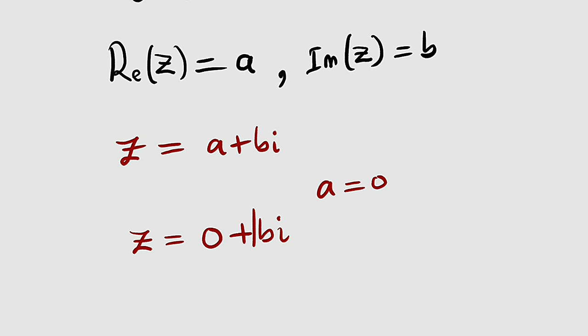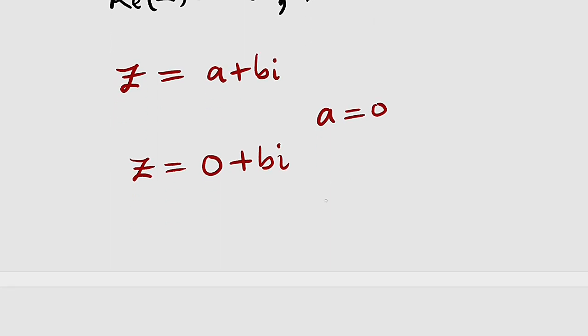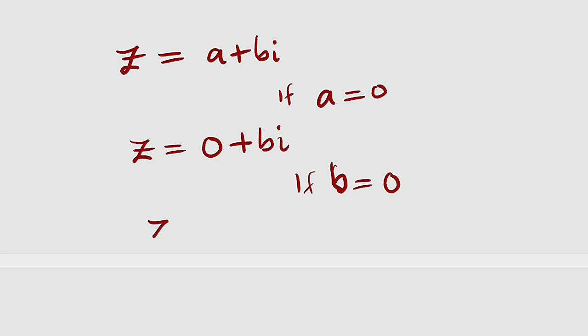If b is equal to zero, we have z to be equal to a + 0i, and 0i is just zero. This implies that z is only equal to a, a real number, but this is also a complex number. This is also another complex number. All together, we have seen that both real and imaginary numbers combined together are subsets of complex numbers.